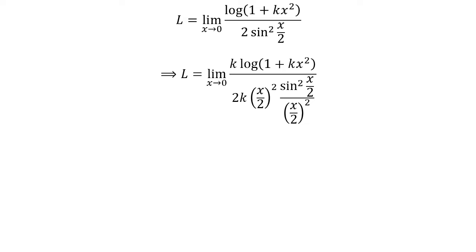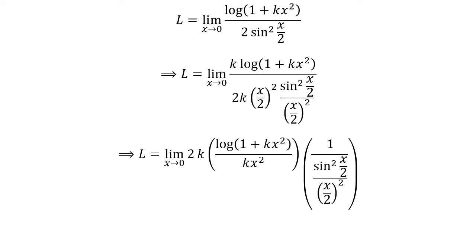If we multiply and divide an expression by a common expression, the value of the expression remains the same. Here, the numerator expression is multiplied and divided by k, and similarly the denominator expression is multiplied and divided by square of half of x. We can rewrite the above expression as l is equal to the limit of 2 times k times natural log of 1 plus k times square of x upon k times square of x, times 1 upon square of sine of half of x upon half of x, as x approaches 0.